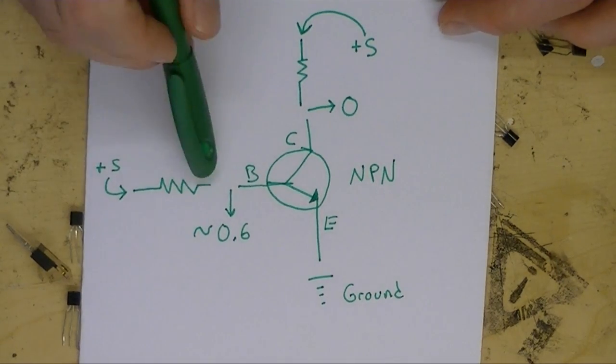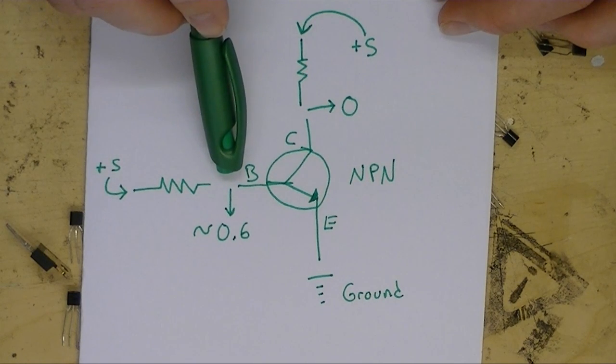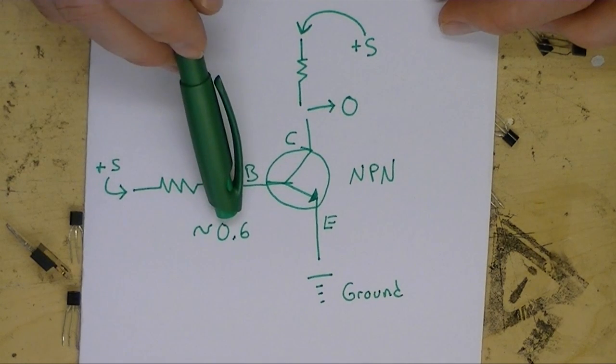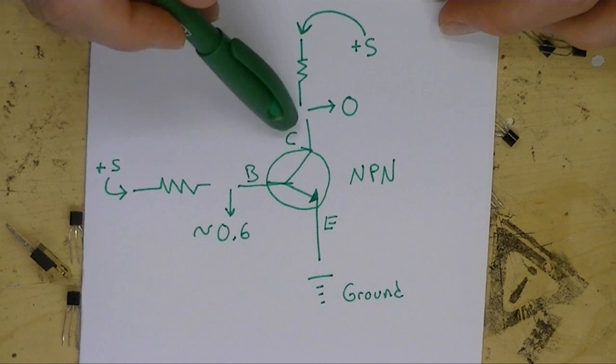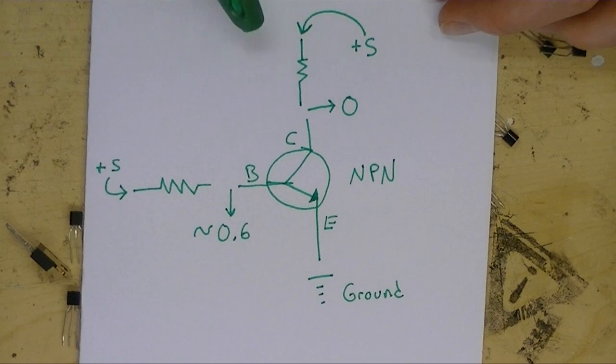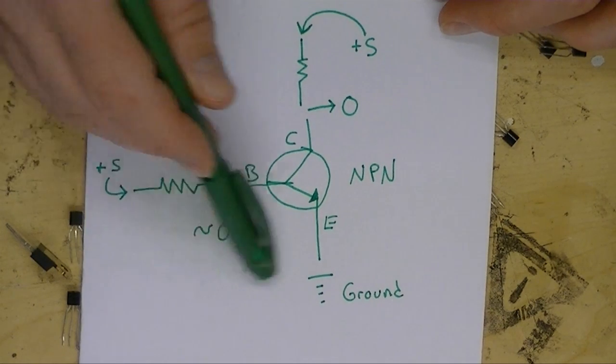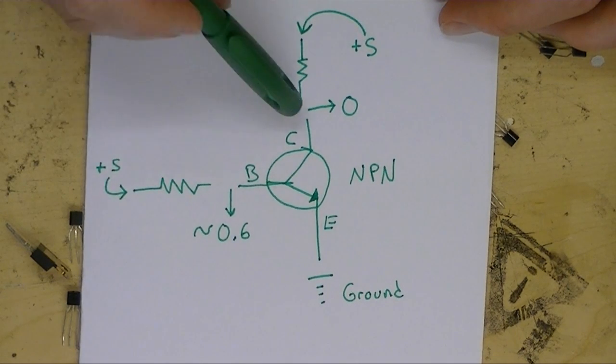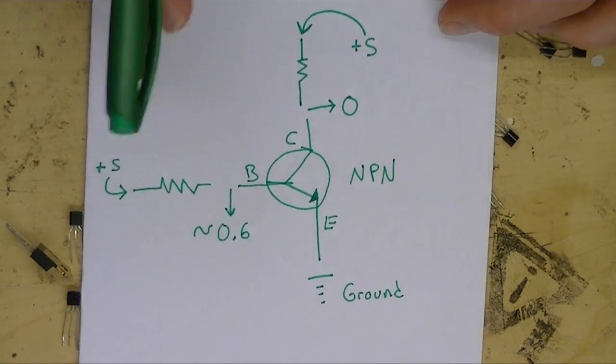Now when this happens, the voltage after the resistor on the base should drop to about 0.6 volts. The voltage at the collector after the resistor should drop to nearly 0 volts too. So if you apply these settings to the pins, and then you find these values, you can be reasonably certain that you found an NPN transistor.